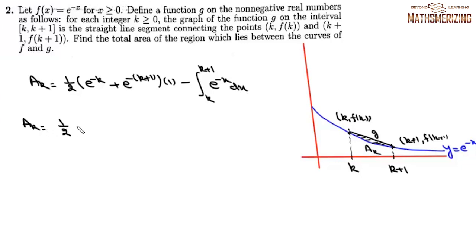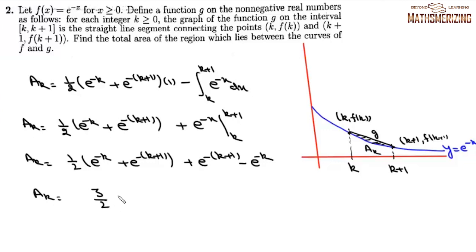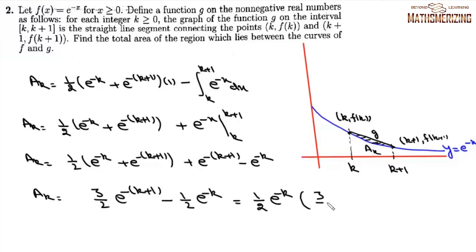So A_k = (1/2)(e^(−k) + e^(−(k+1))) − [e^(−x)] from k to k+1, which gives (1/2)(e^(−k) + e^(−(k+1))) + e^(−(k+1)) − e^(−k). Simplifying, A_k = (3/2)e^(−(k+1)) − (1/2)e^(−k) = (1/2)e^(−k)(3/e − 1) = e^(−k) · (3 − e)/(2e).